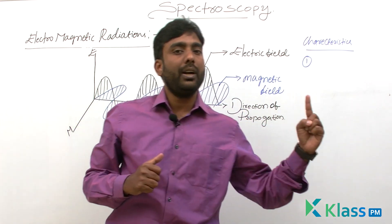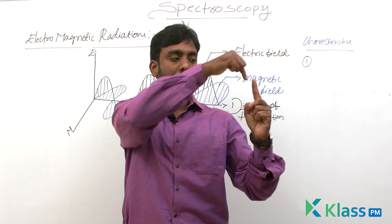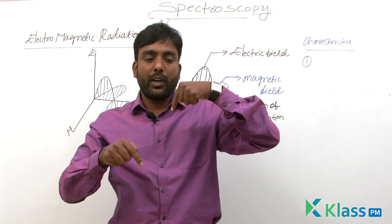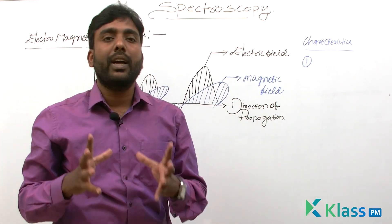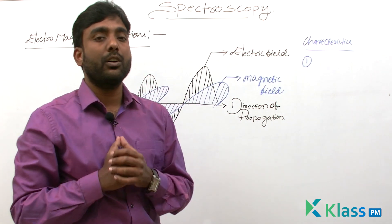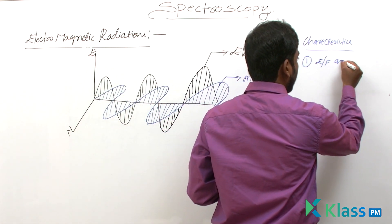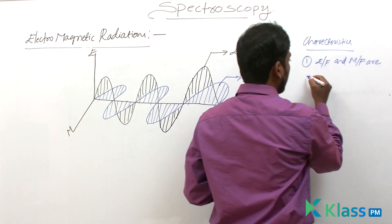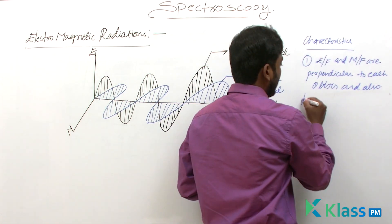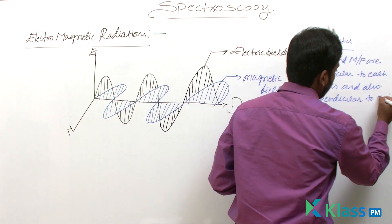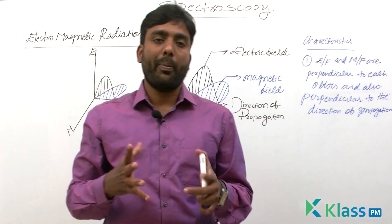These two fields are also perpendicular to the direction of propagation. The direction of propagation goes in one direction, and each field oscillates at 90 degrees to it. So the oscillating electric and magnetic fields are perpendicular to each other and also perpendicular to the direction of propagation. This is the first characteristic.